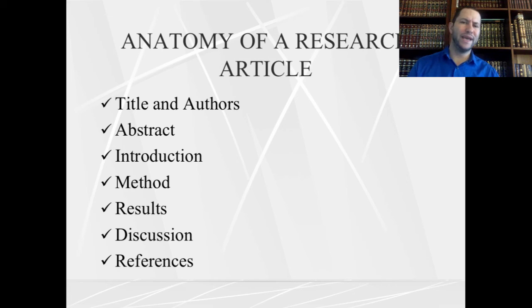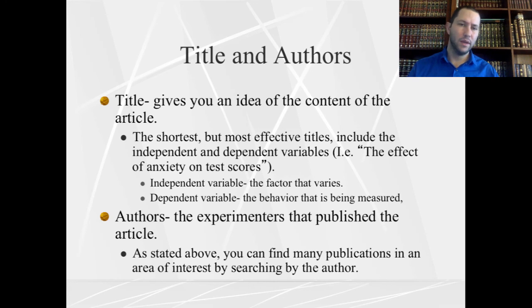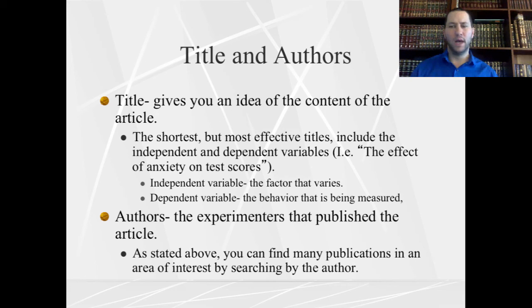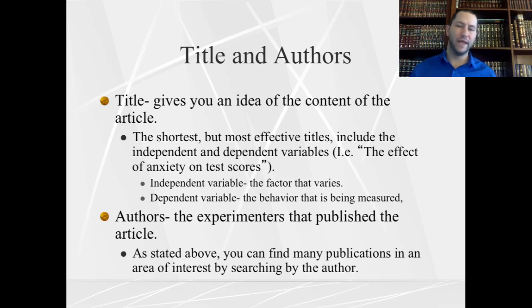Now let's look at the anatomy of a research article. A research article has: title and authors, abstract, introduction, methods, results, discussion, and references. The title is 12 words or less — a brief, catchy but informative label of what you did. Ideally it should include the independent variable and dependent variable so readers know what was studied. The authors are listed with their affiliation and university.